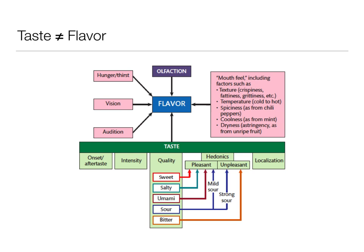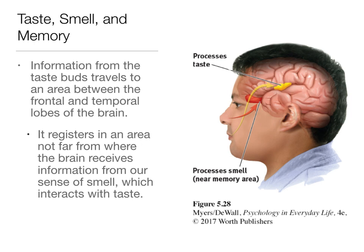Taste by itself is a bottom-up contributor, whereas those other factors are top-down contributors. The last thing I wanted to talk about is how taste and smell really affect our memory. The information from our taste buds travels to an area between the frontal and temporal lobes in the brain, and it registers not far from the area of the brain that receives information on smell, which interacts with taste. Because of their location and the processes they go through, taste and smell are really being linked to memories a lot more. That ends our conversation about the chemical senses — thanks so much.